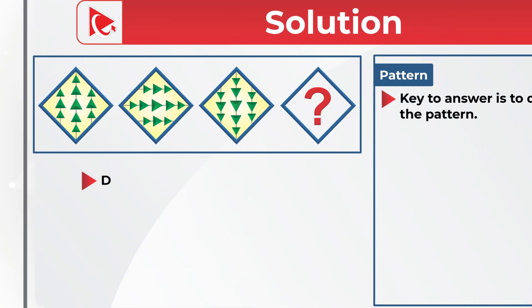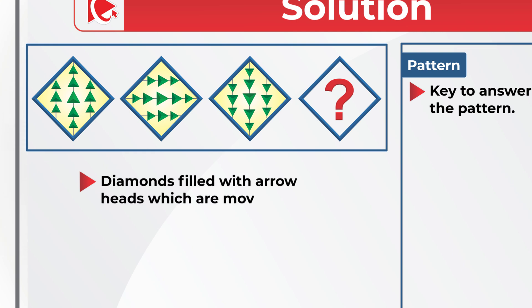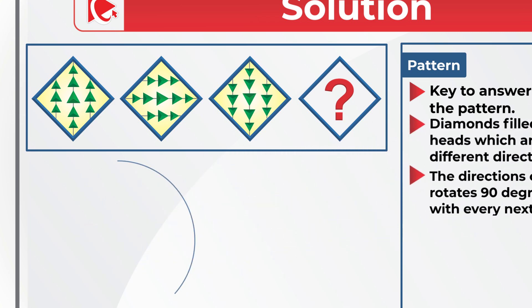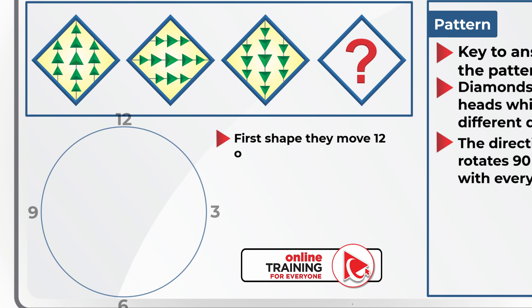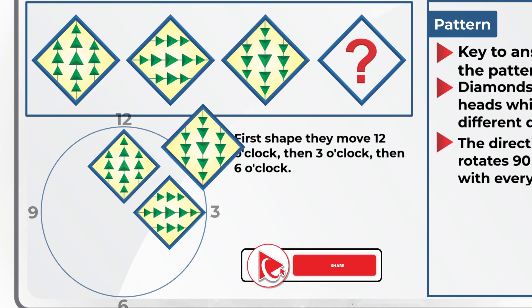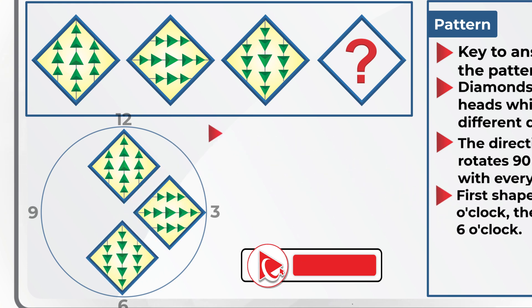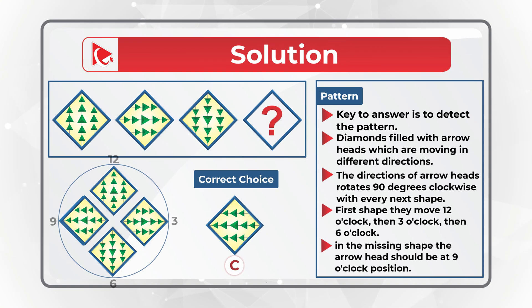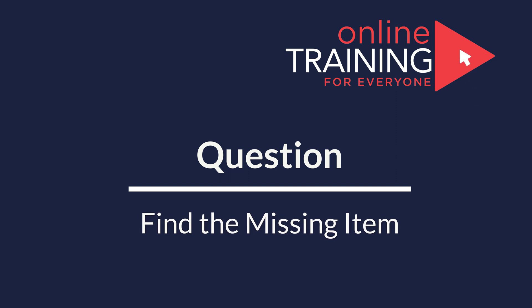If you look closely, the diamonds are filled with arrowheads (triangles) moving in different directions. The direction of the arrowheads rotates 90 degrees clockwise with every next shape. In the first shape they point to the 12 o'clock position, then 3 o'clock, then 6 o'clock. So in the missing shape, the arrowheads should be at the 9 o'clock position.